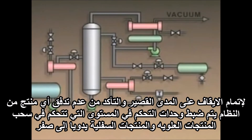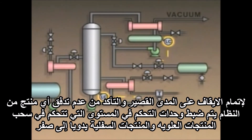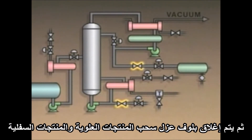To complete the short-term shutdown and ensure that no product flows from the system, the level controllers that control the takeoff of overhead product and bottoms product are manually set to zero. Then, the isolation valves in the overhead product and bottoms product takeoff lines are closed.